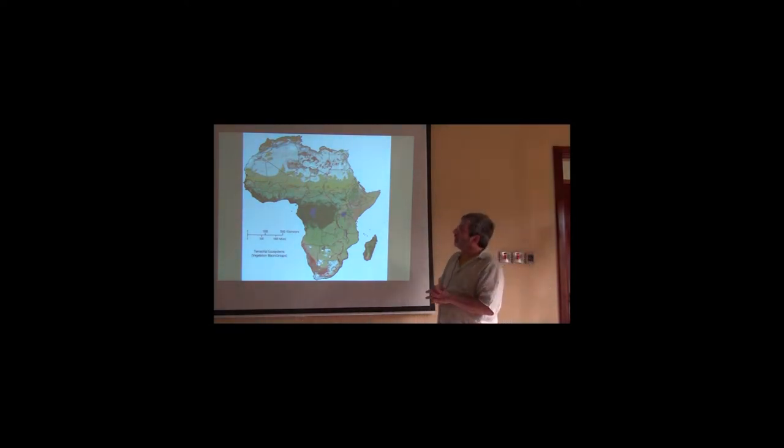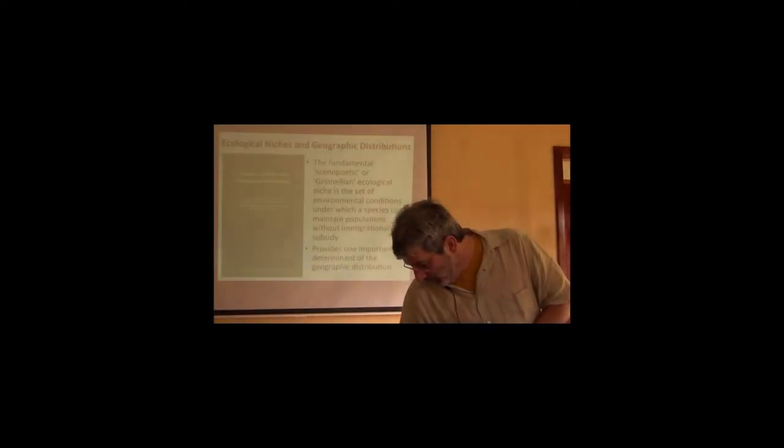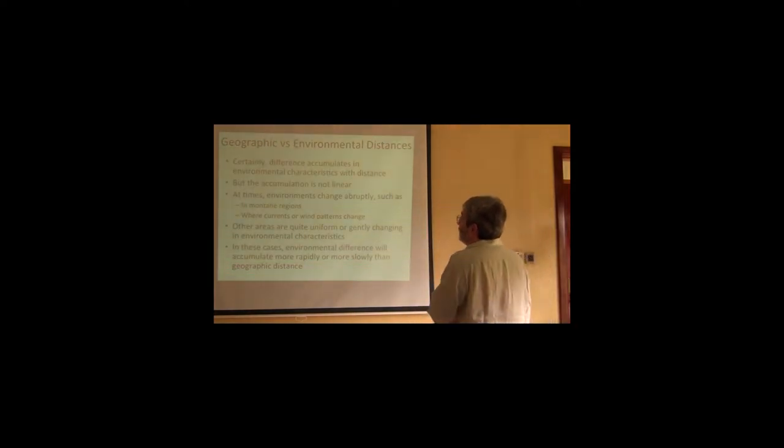So, we could look at a different kind of map that tells us something about environment. Okay? And, essentially, what I'm saying is that some distances, let's imagine this distance, that distance kind of stays in the same conditions. But that same distance there, or there, or there, makes a huge difference. Okay? So, we have geographic distance, and we know that in some way relates to turnover in species. But then we have environmental difference that also is playing a role. And so, we really have to start sorting out these two sets of influences.